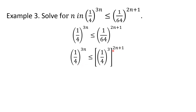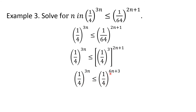When we have two exponents, we use the power rule for exponents and multiply them. So we distribute 3 to each term in 2n plus 1. That gives us 1 fourth to the 3n is less than or equal to 1 fourth to the 6n plus 3. According to the property of exponential inequalities, if the base is between 0 and 1 — in this case 1 fourth — the function is decreasing. That means we flip the inequality symbol when we focus on the exponents. So this becomes 3n is greater than or equal to 6n plus 3.